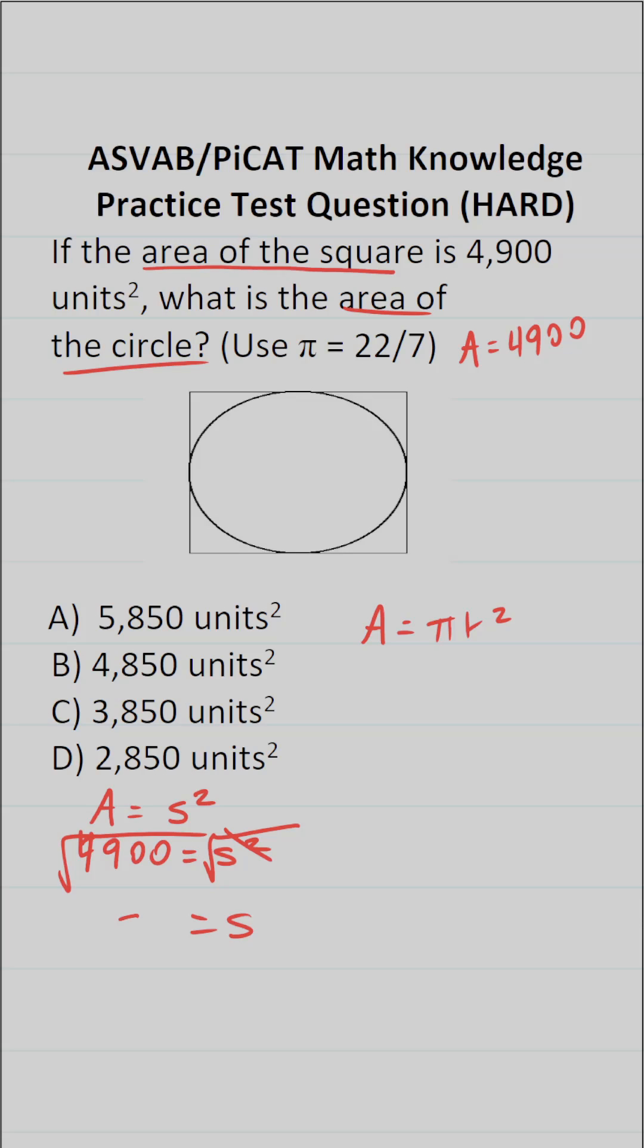The square root of 49 would be 7. The square root of 4,900 is going to be 70. So we know the side length of this square is 70 units.